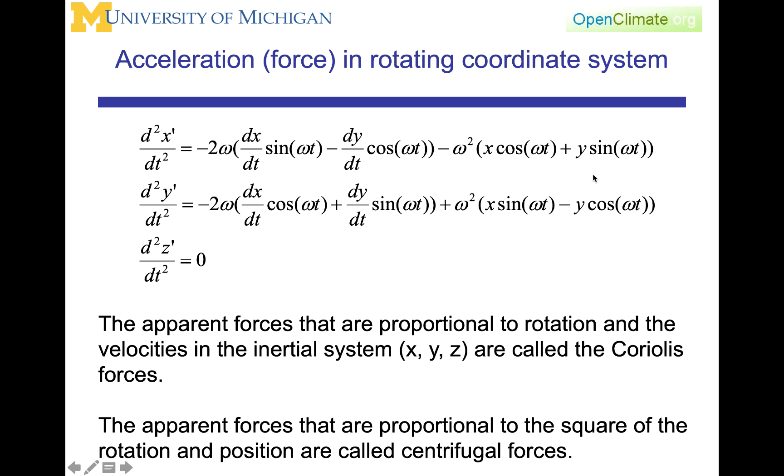And then we get a second form, which is ω², times x, which will be position, and y, which will be position, and the sinusoidal functions that are representing the rotation. And we see we have this form of 2ω times a velocity, ω² times a position.